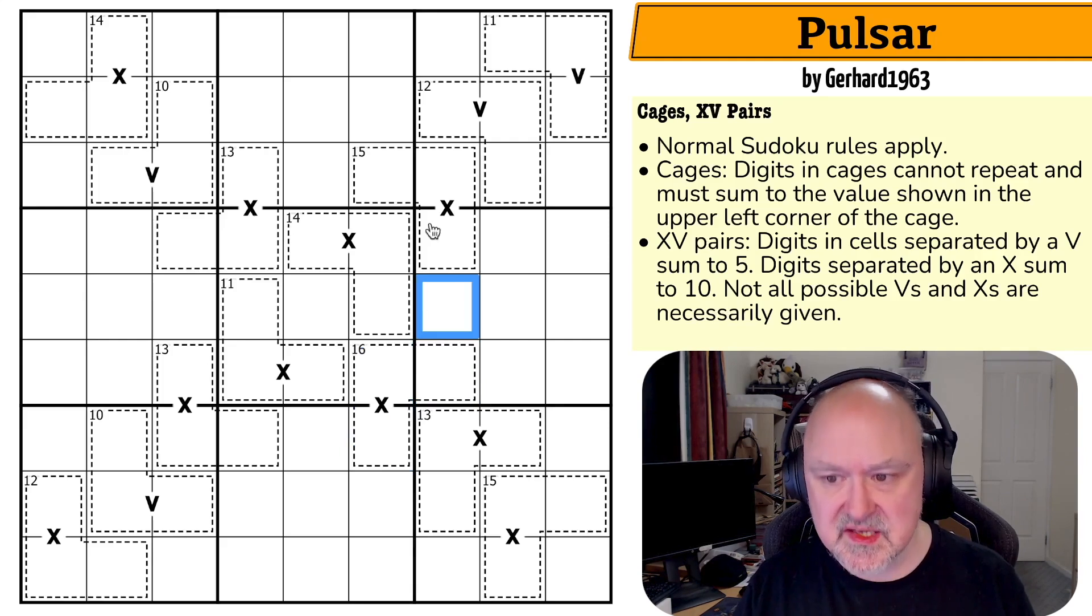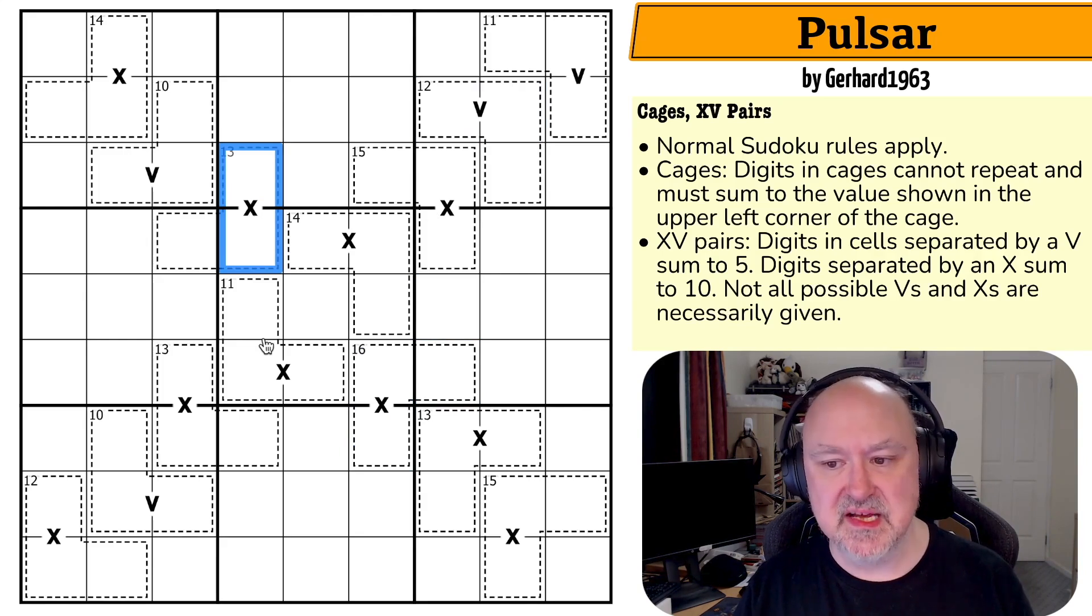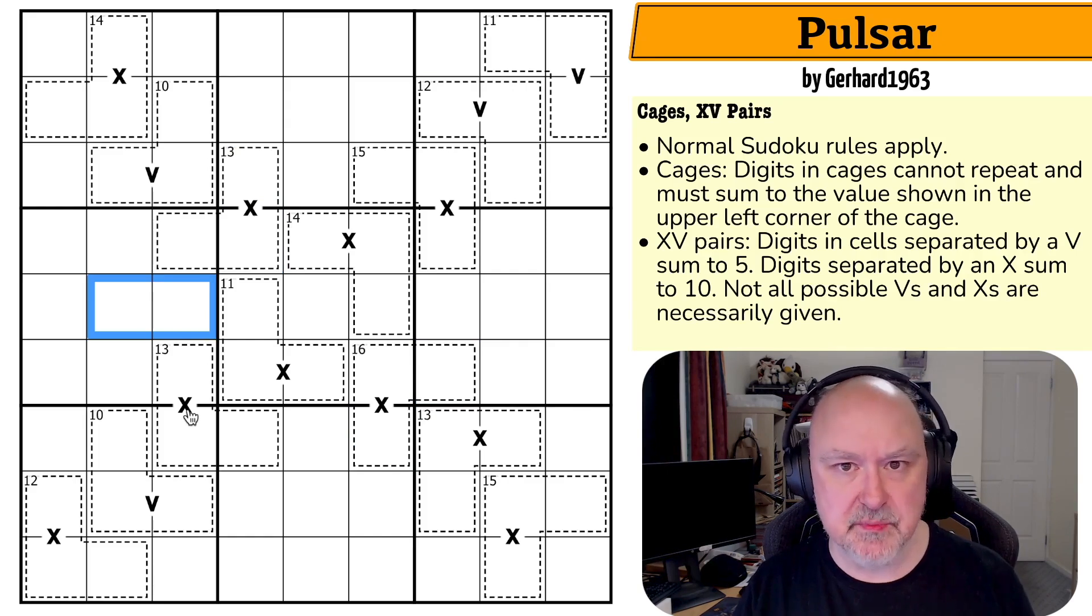Now XV pairs: digits in cells separated by a V sum to five, digits in cells separated by an X sum to 10, and not all possible X's and V's are necessarily given. So it might be fine for those two cells to sum to five or 10. You do not need an X and V, it's just that where they're given they are forced to be those sums.